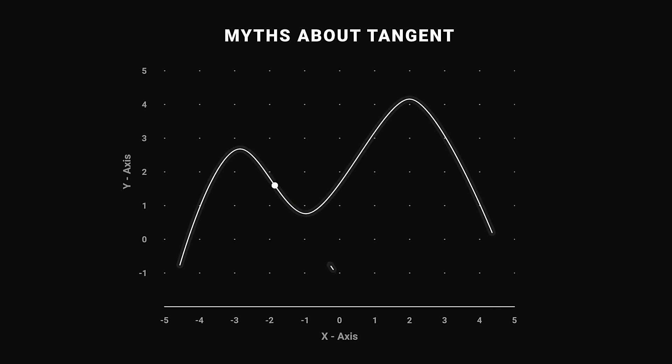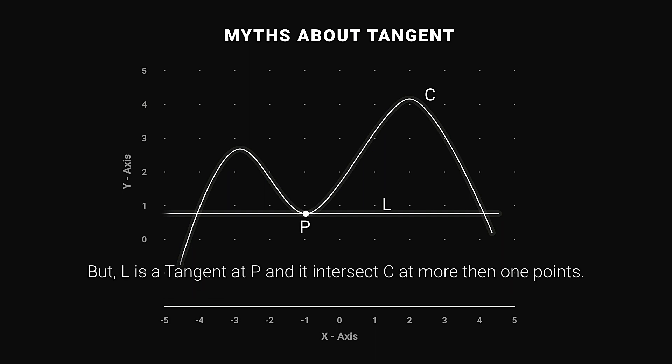A line lies on two sides of curve cannot be tangent. A line meeting the curve only at one point is a tangent to the curve. A line meeting the curve at more than one point is not a tangent to the curve.